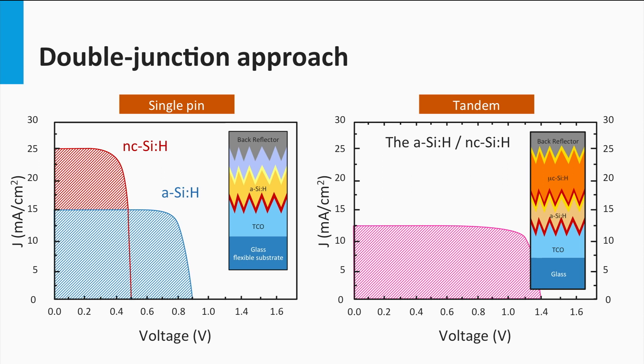Given the examples of the single junction here, the best current matching of both cells would deliver 12.5 mA per square centimeter.